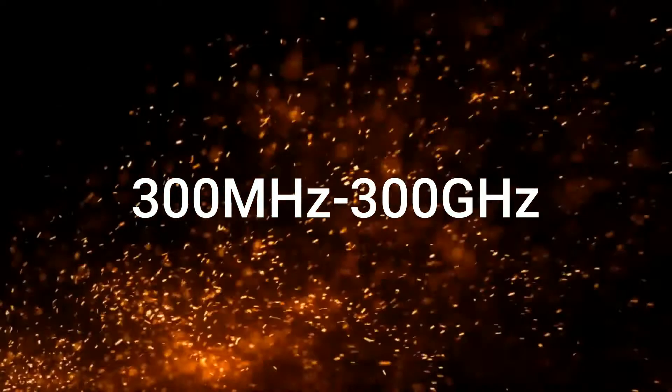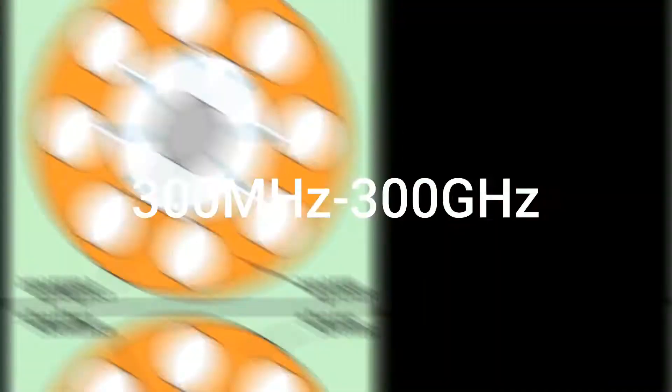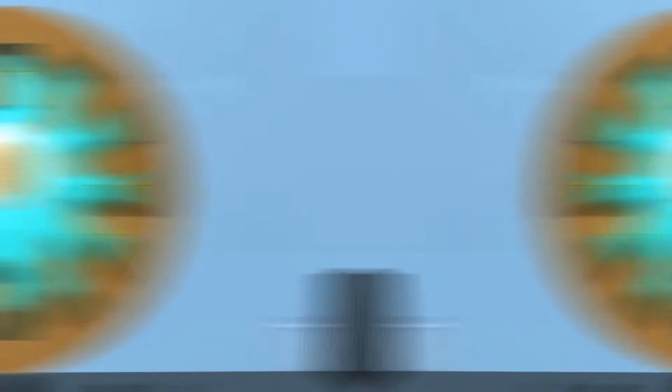Microwaves are a form of electromagnetic radiation with wavelengths ranging from about 1 meter to 1 millimeter with frequencies between 300 megahertz and 300 gigahertz.